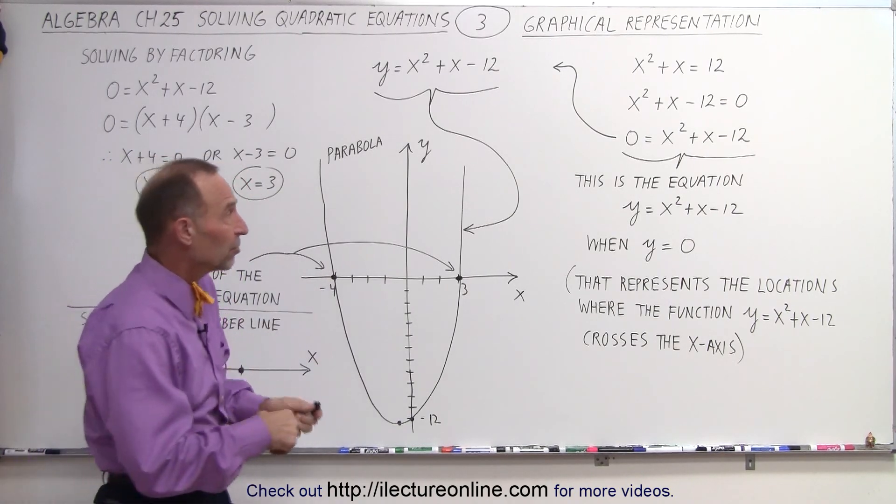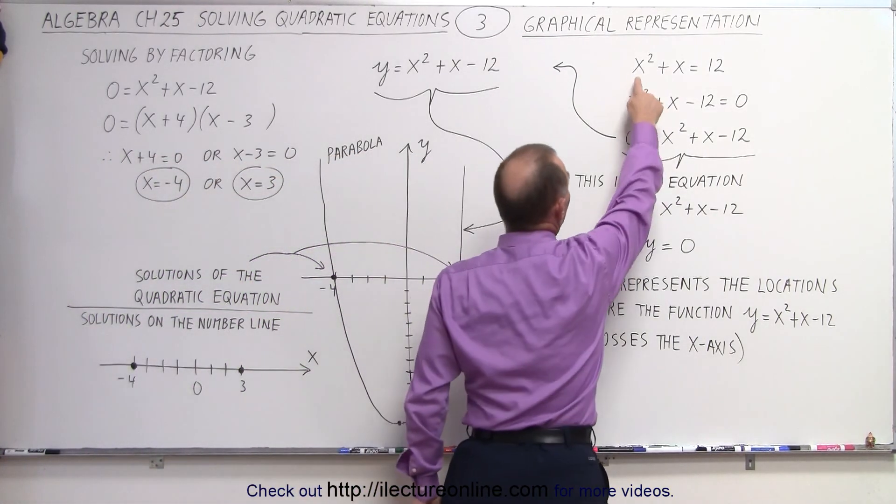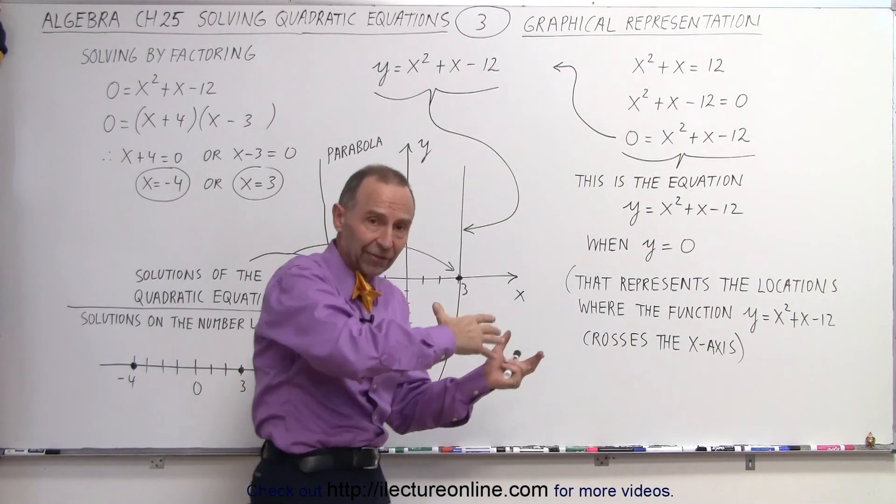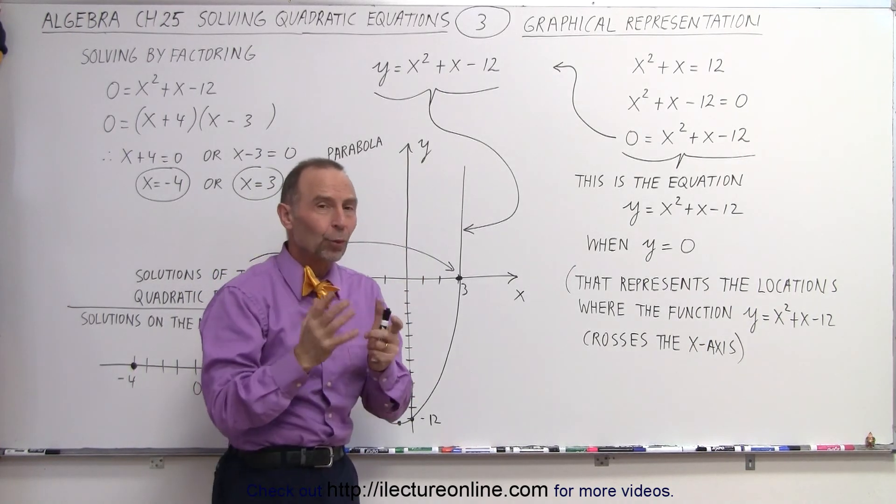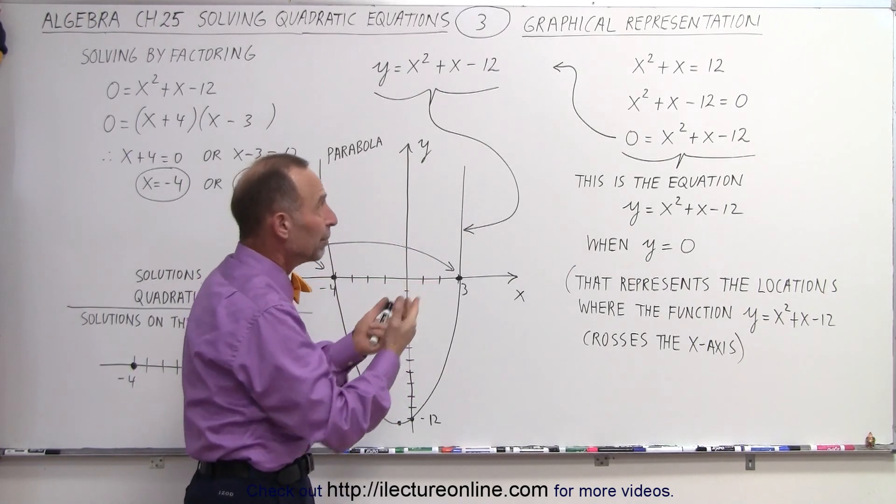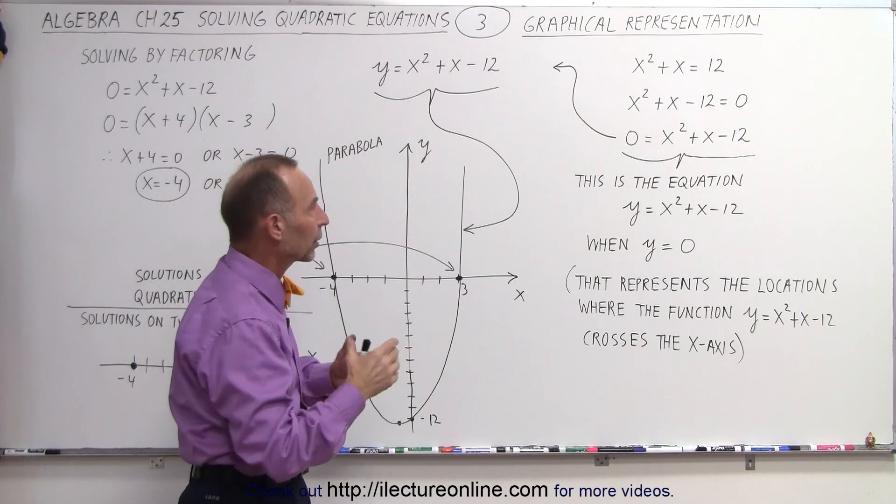So we grab one of the examples we showed you before, x squared plus x equals 12. It's an equation. It has a left side, an equal sign, and a right side. And the unknown variable, there's one term where it's raised to the second power. That makes it a quadratic equation.